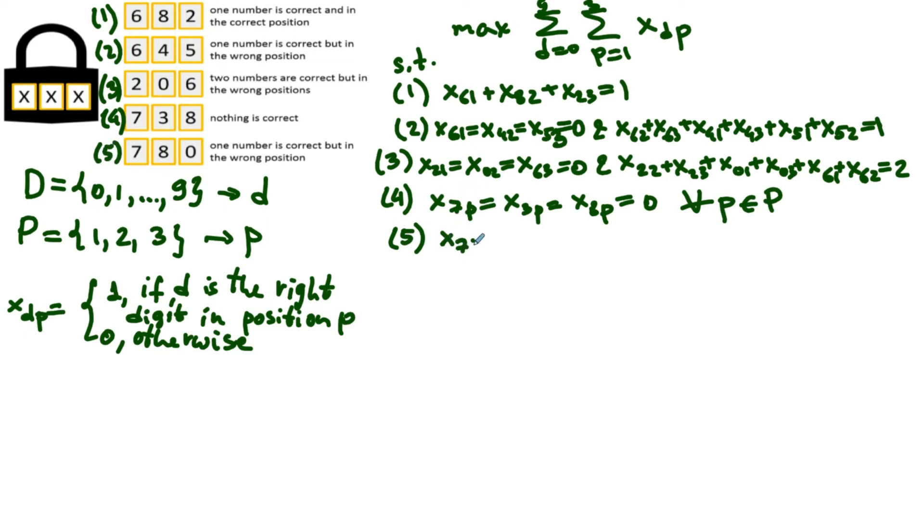And the last one is very similar to the second one. Each of the variables x seven one, x eight two and x zero three is zero, and x seven two plus x seven three plus x eight one plus x eight three plus x zero one plus x zero two equals one. Okay, we wrote constraints describing all the five conditions.